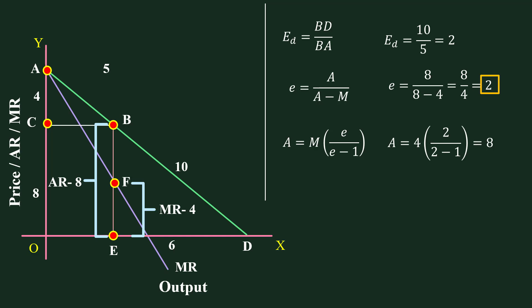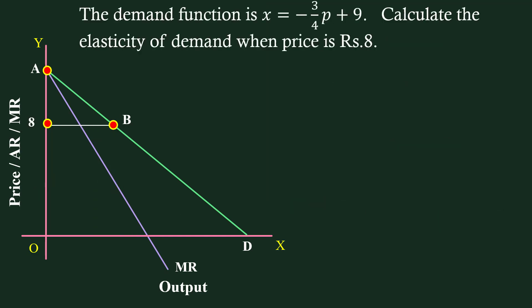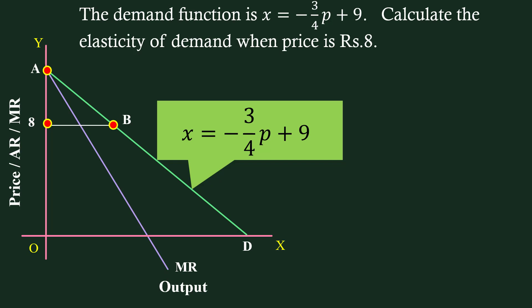Using the formula for Marginal Revenue — M = A × (1 − 1/E) — with Elasticity at point B equal to 2 and Average Revenue equal to 8: M = 8 × (1 − 1/2) = 4. Marginal Revenue is 4. Before finishing this lesson, let me give you a problem. The demand function is X = −(3/4)P + 9. Calculate the Elasticity of Demand when price is 8. This demand function is the equation of the demand curve used so far, and Elasticity is to be calculated exactly at point B.